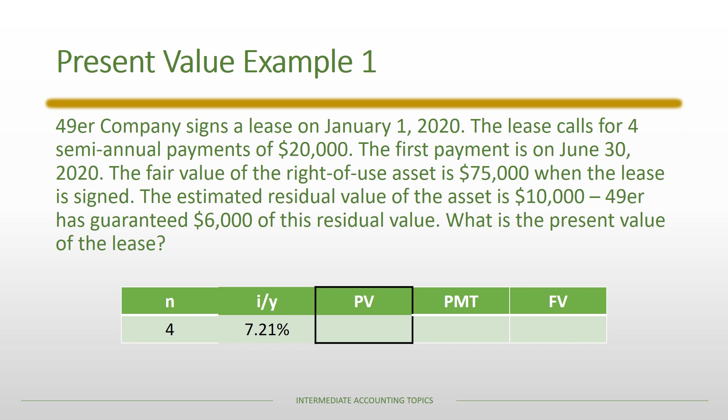From the prior calculation we know N is four and the I/Y, the implicit rate in the lease, is 7.21%. The payment is $20,000, but notice I've changed the sign to negative because from the lessee's perspective they're making that payment rather than receiving it. The future value, instead of being $10,000, is negative $6,000 because the lessee has guaranteed that $6,000 residual value — they have not guaranteed the entire $10,000, so they're only obligated to $6,000.